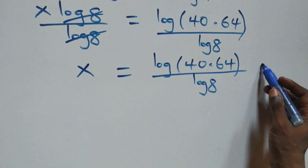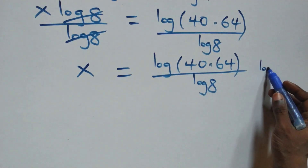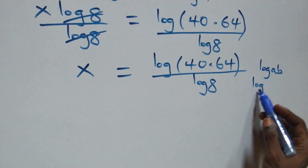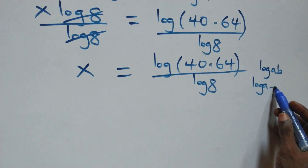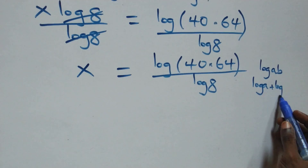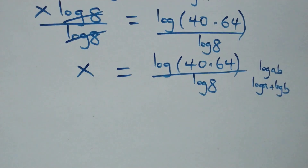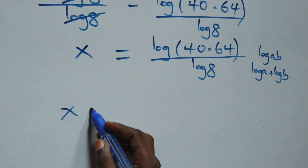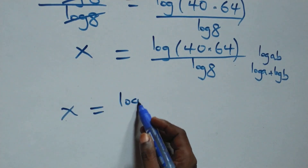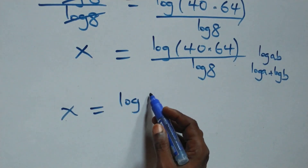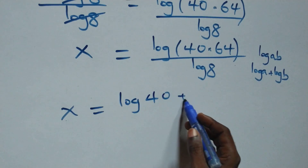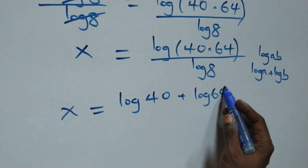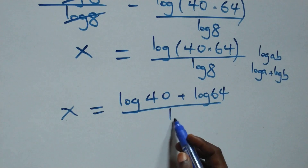This follows from the law of logarithms, where log of a times b is the same thing as log a plus log b. So this becomes x equals log 40 plus log 64, all over log 8.